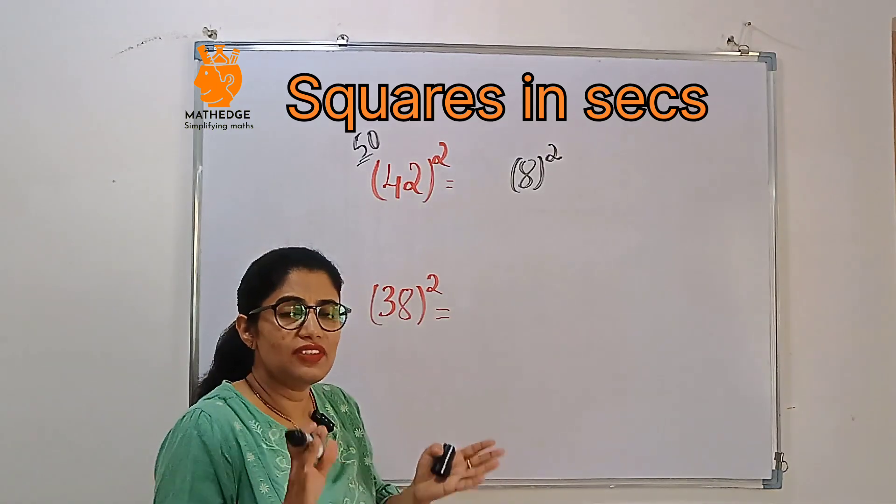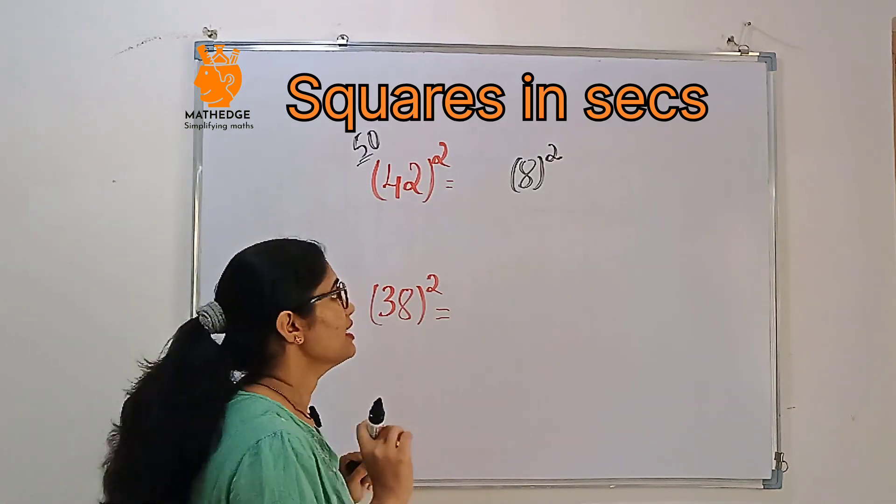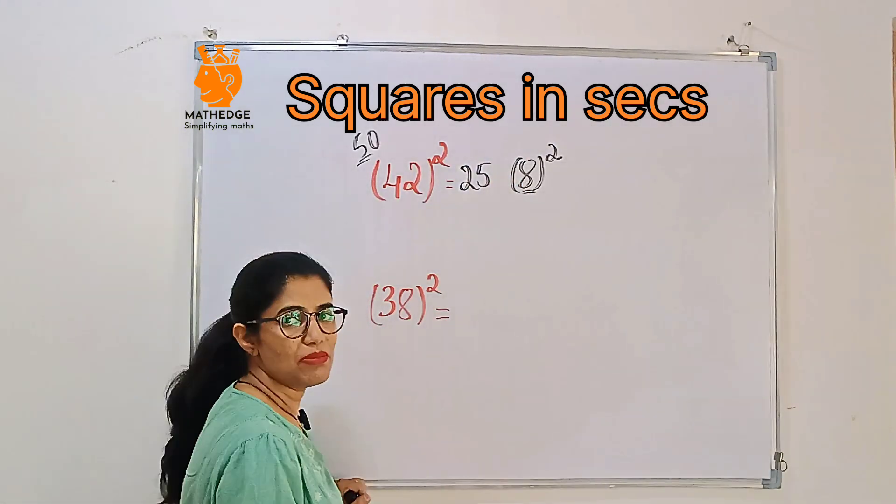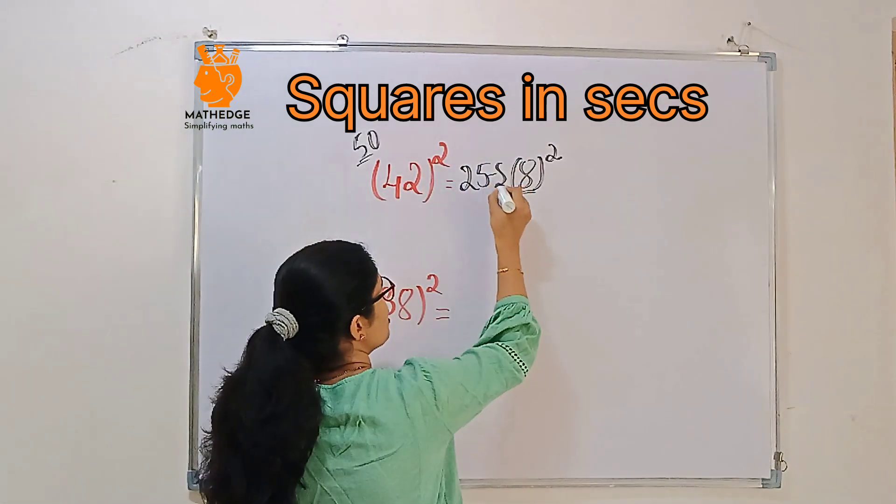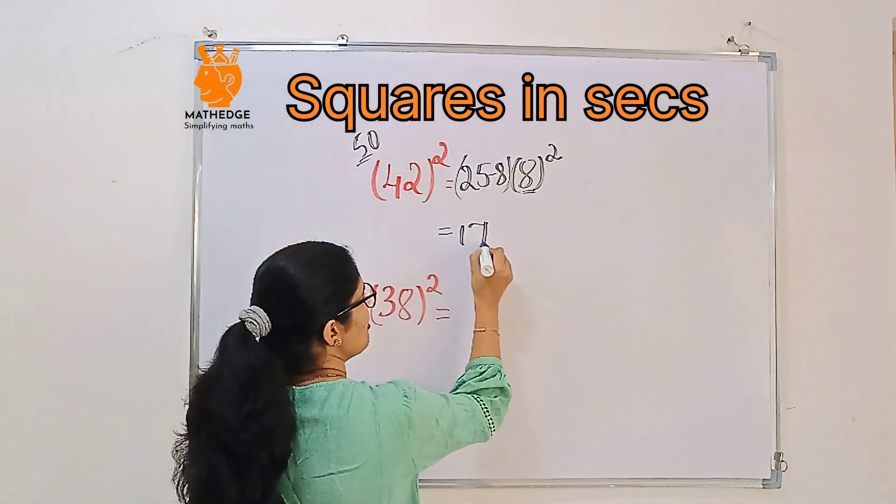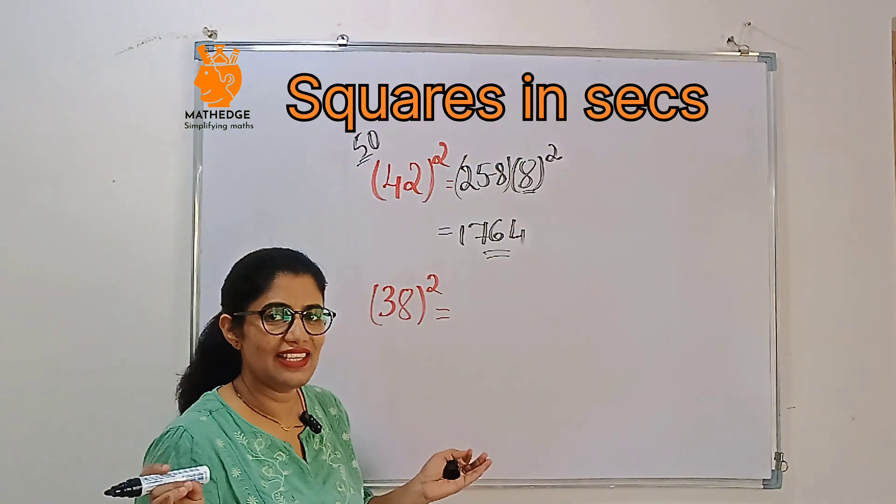After that, if the numbers are less than 50, we always subtract from 25. And here, write 25 and subtract the lesser number, which is 8, from 25. 25 minus 8 is 17, and 8 squared is 64. See, that's our answer: 1764. We just did it in seconds.